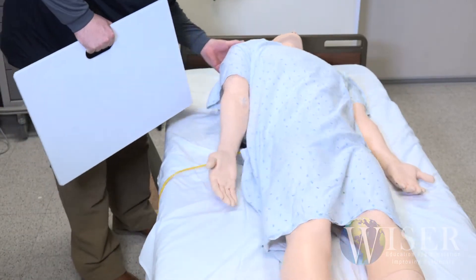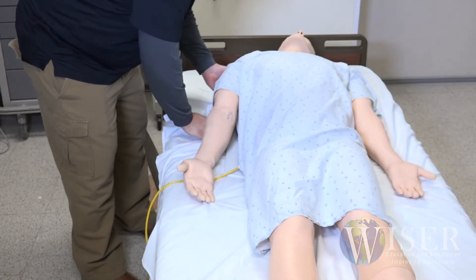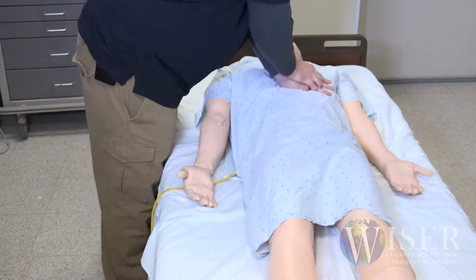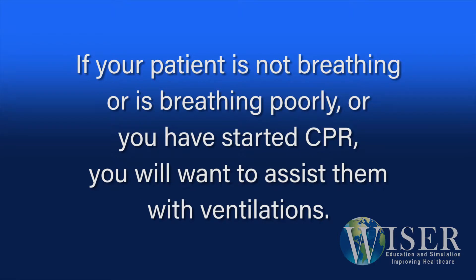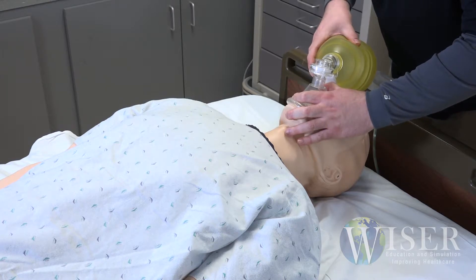Also, don't be afraid to lift this guy up and place a backboard. Be mindful of any wires running from him, but by all means get your backboard in place. If your patient is not breathing, breathing poorly, or you have started CPR, you will want to assist them with ventilations. Place the mask over the patient's nose and mouth and proceed with bagging. You will see chest rise if performed properly.